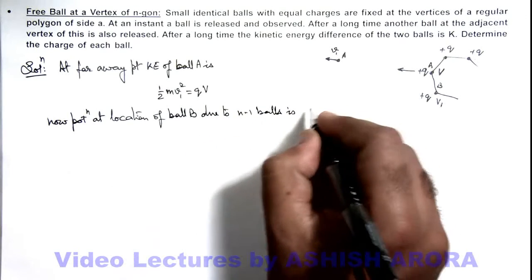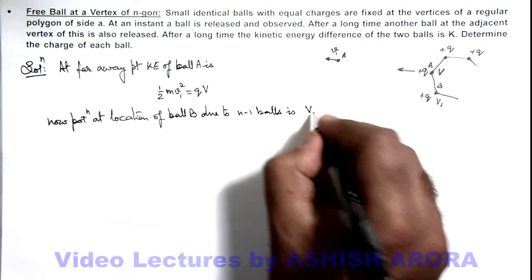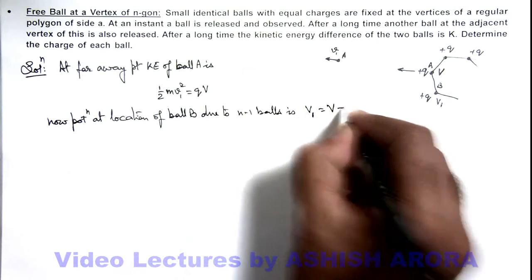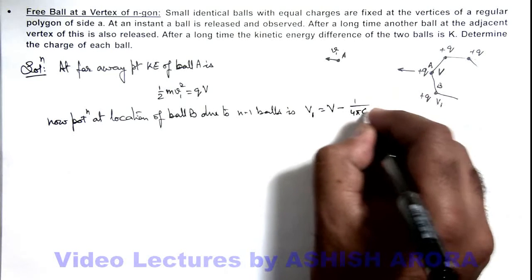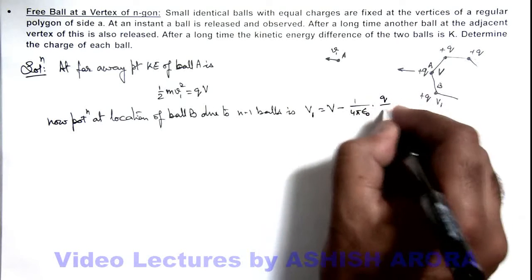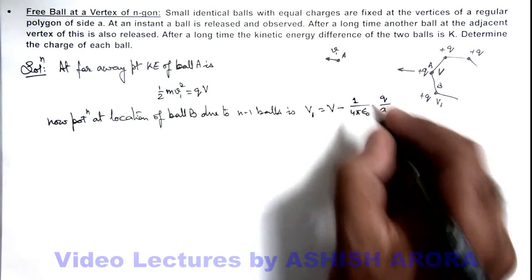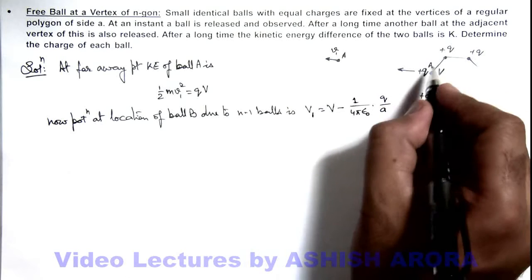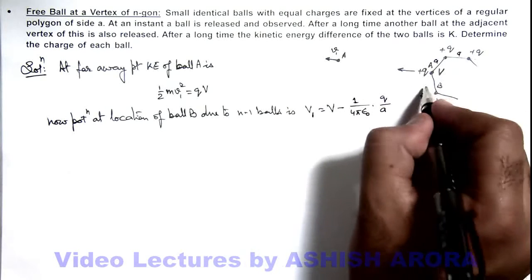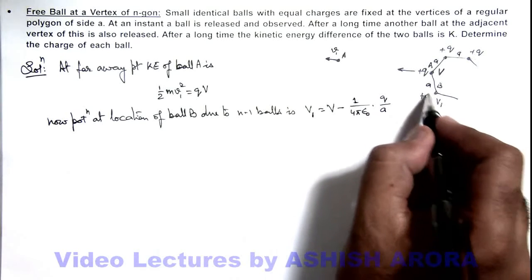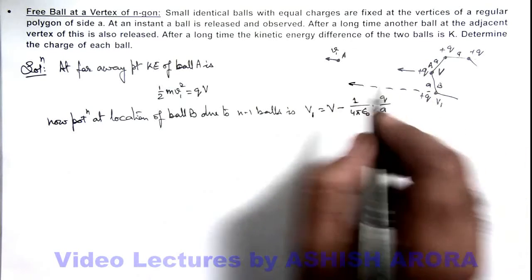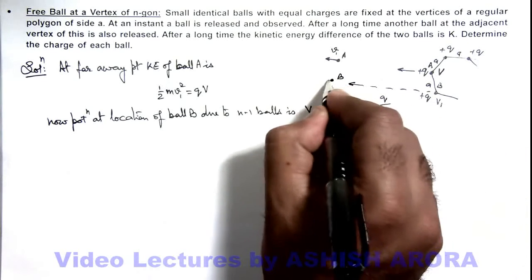Here we can write this potential as v₁ which is v minus the potential due to this ball which is 1/(4πε₀) × q/a, if we consider a is the edge length of this n-gon. So in this situation now we can write the second ball when it will reach far away point, this ball B will be having a speed v₂.